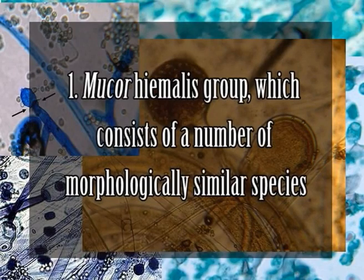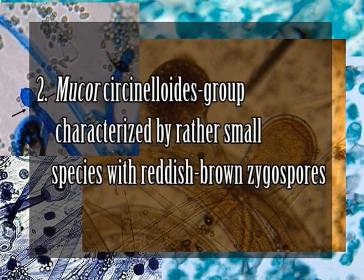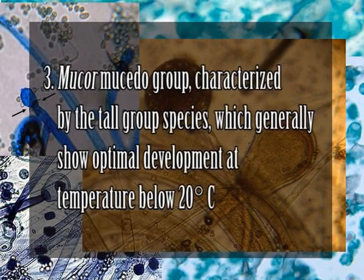The majority of species can be placed into one of three groups based on morphology. These are the Mucor hiemalis group, which consists of a number of morphologically similar species; the Mucor circinelloides group, characterized by rather small species with reddish-brown zygospores; and the Mucor mucedo group, characterized by tall species which generally show optimal development at temperatures just below 20 degrees Celsius.